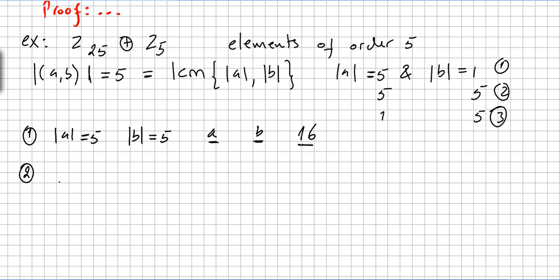Case 2: order of a is 5 and order of b is 1. We are in Z25, so there are four choices for a, and only one choice for b. This gives us four more elements of order 5.